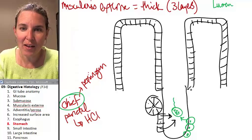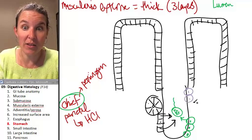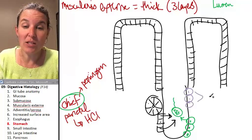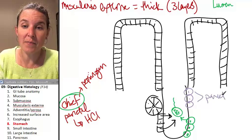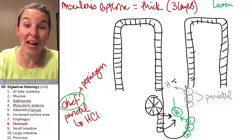And then higher up, how cool is this, are other kinds of cells. What kinds are these guys? These are your parietal cells.